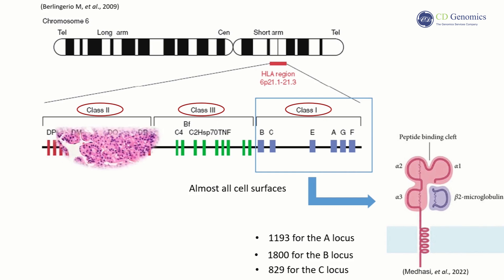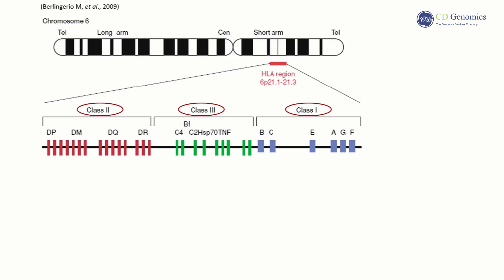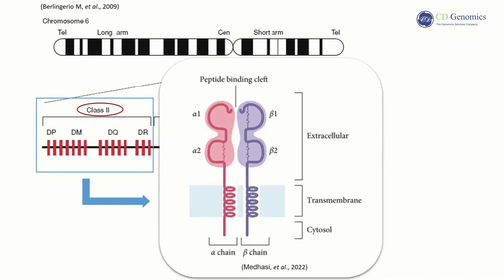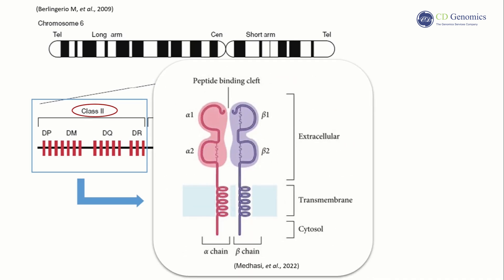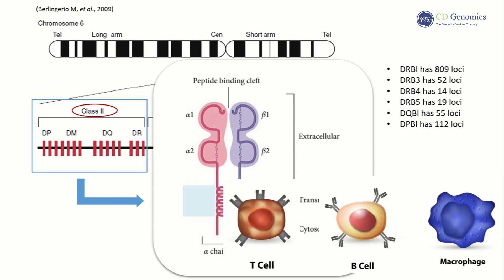HLA Class I genes are widely present in various tissue cells, expressed on the surface of the majority of nucleated cells, albeit at varying levels. HLA Class II includes the DR, DQ, and DP regions, each containing several A and B genes encoding the alpha and beta chains of HLA-II molecules. Among these, DRB1 has 809 loci, DRB3 has 52 loci, DRB4 has 14 loci, DRB5 has 19 loci, DQB1 has 55 loci, and DPB1 has 112 loci. HLA Class II is present in B cells, macrophages, dendritic cells, and activated T cells.